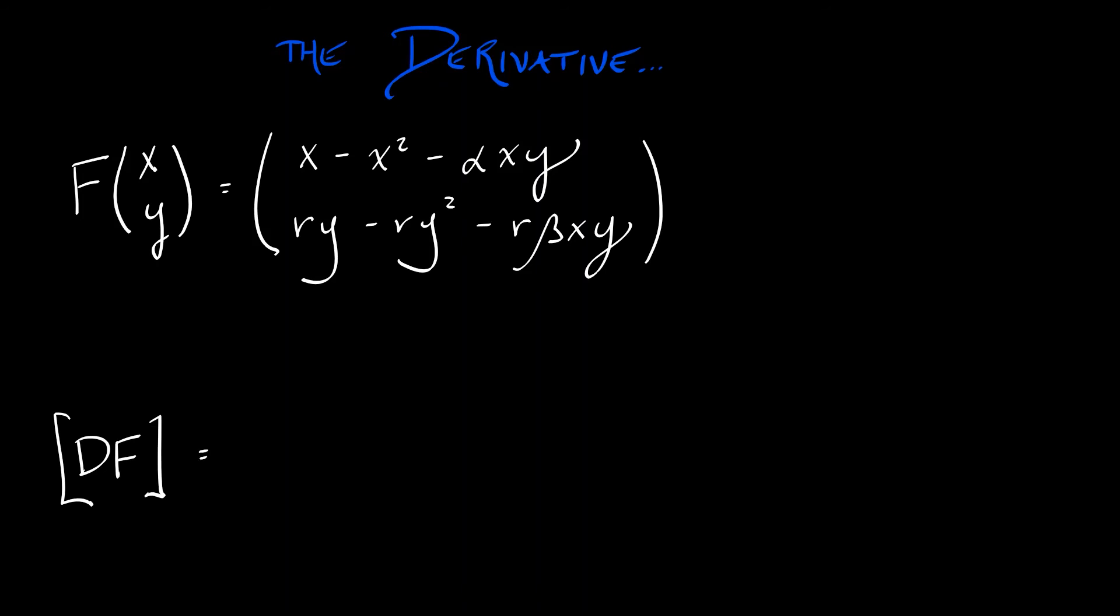Let's compute the partial derivatives. The partials with respect to X are first, 1 minus 2X minus alpha times Y. Second, minus R times beta times Y.